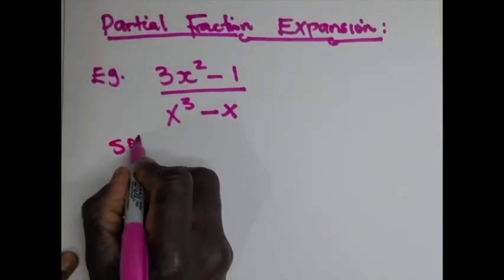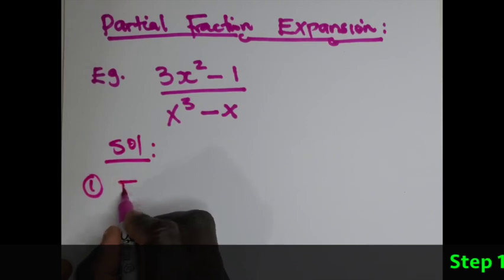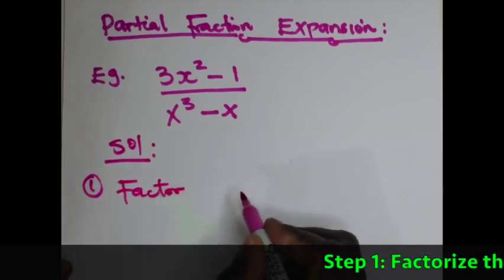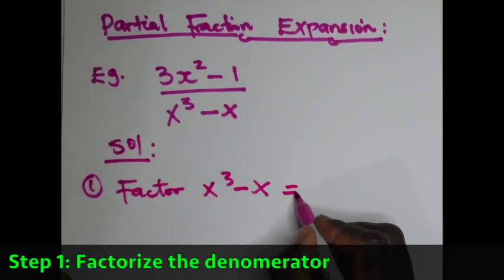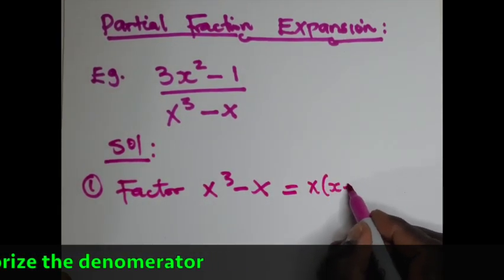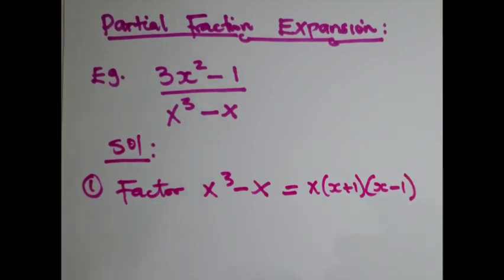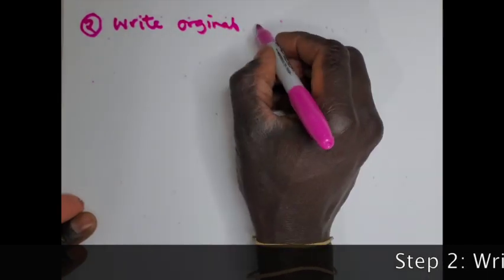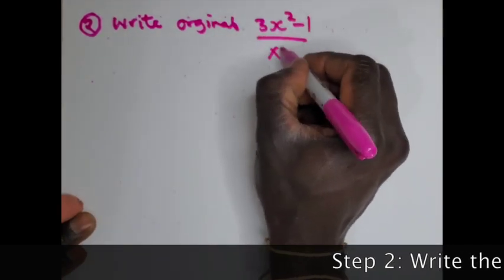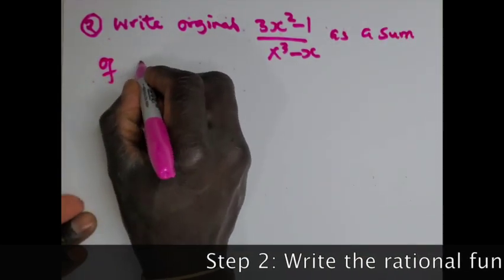Solution: Step one, you're going to factorize the denominator. Step two, write the rational function in its simplest form.